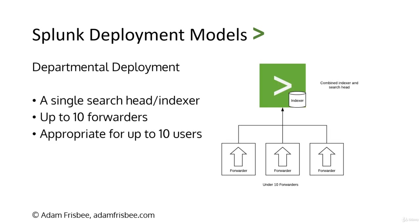The first deployment model is what Splunk calls a departmental deployment. This is where we have a single search head and indexer combination. You provision this indexer search head combination by just telling Splunk what it's supposed to be doing once you install it. This is appropriate for up to ten forwarders and up to ten users — a pretty small deployment.